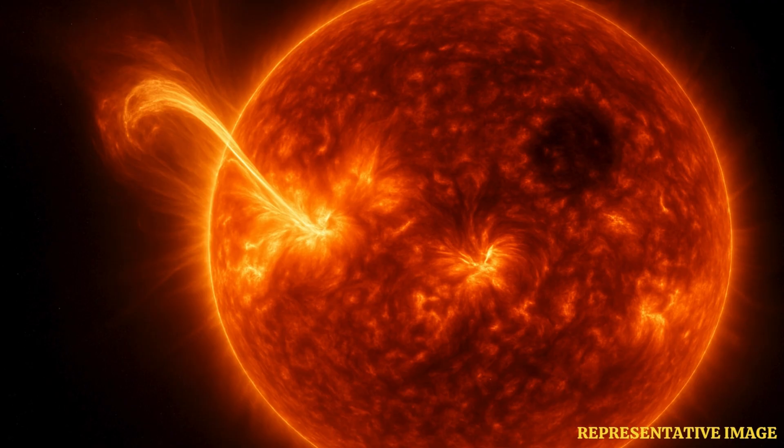A solar flare is an intense burst of radiation coming from the release of magnetic energy associated with sunspots. Flares are our solar system's largest explosive events. They are seen as bright areas on the sun and they can last from minutes to hours, says NASA.